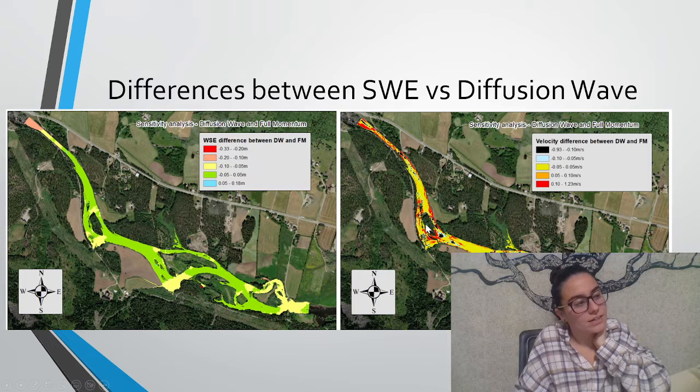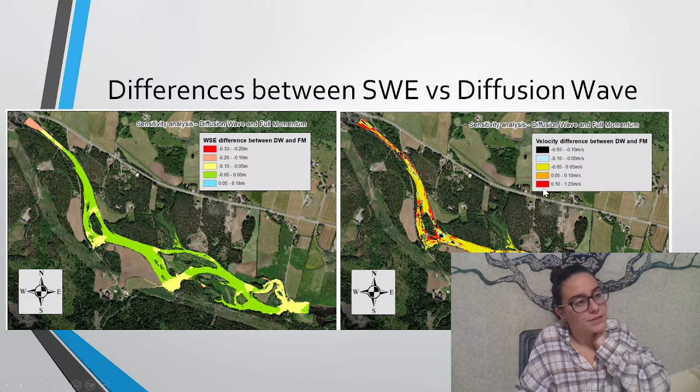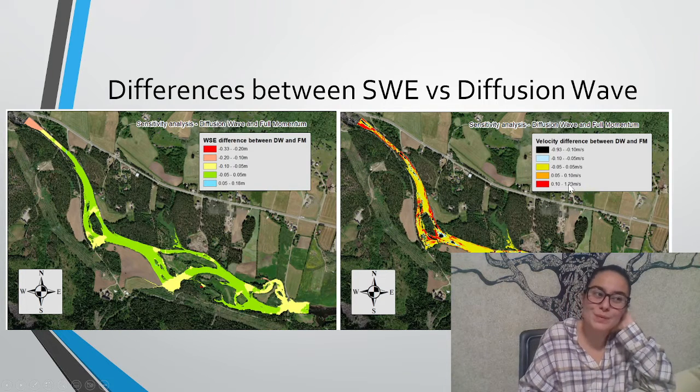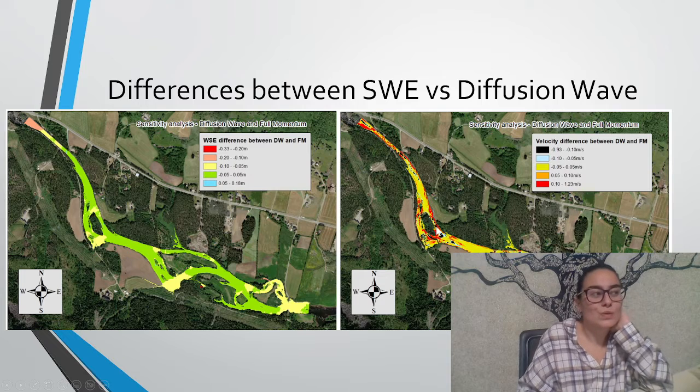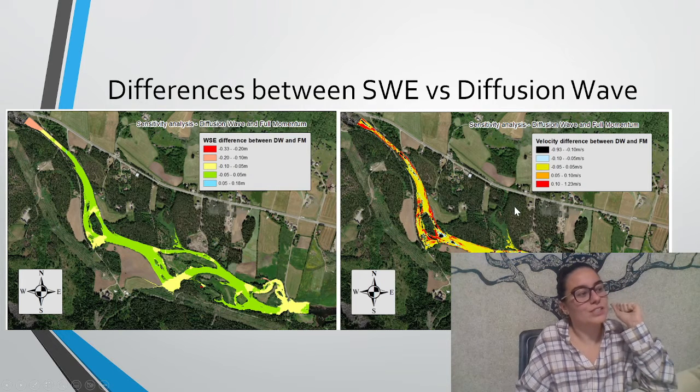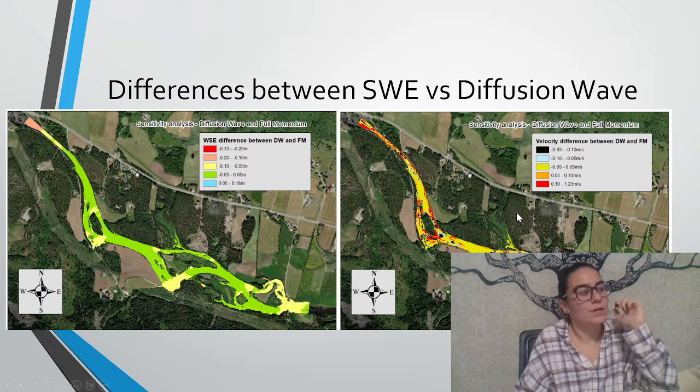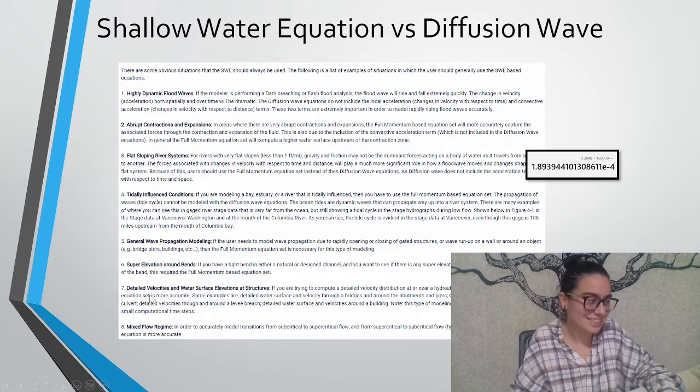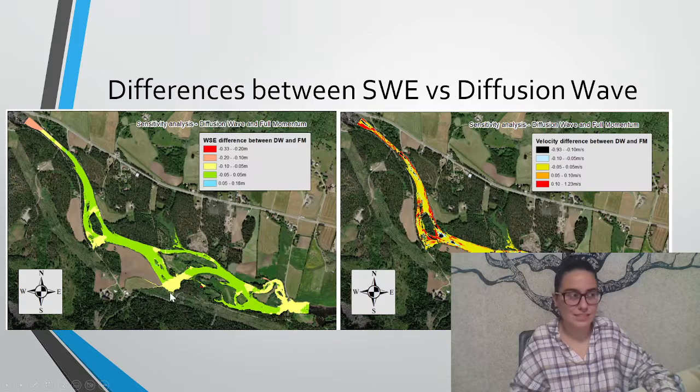Here on the right we see the difference but in velocity. Those are quite higher actually because what is shown in red is between 10 centimeters and 1.23 meters per second. The velocities become more of a problem. That's why it was also included here. If you want detailed velocities, then you might need to use the shallow water equation.